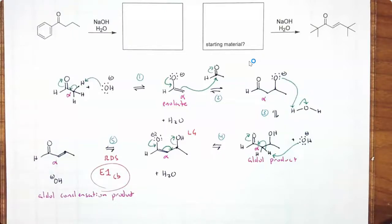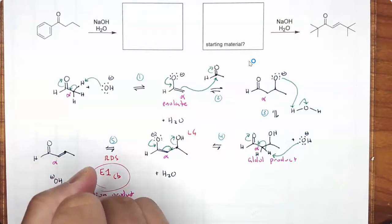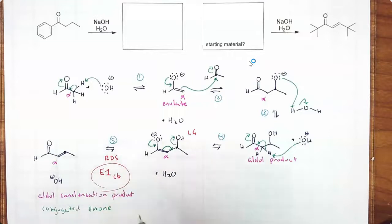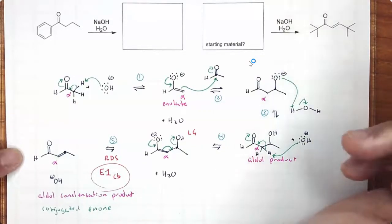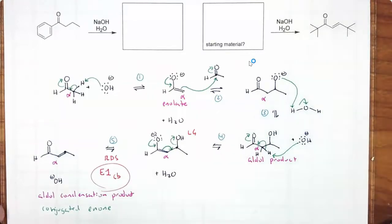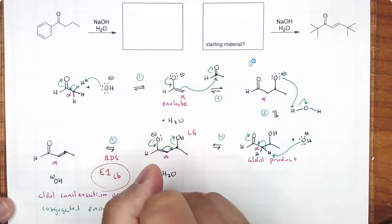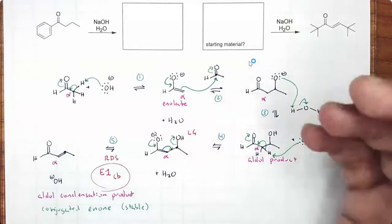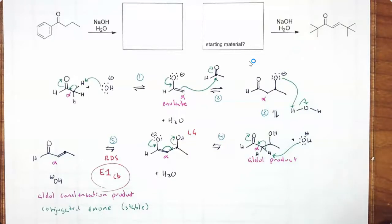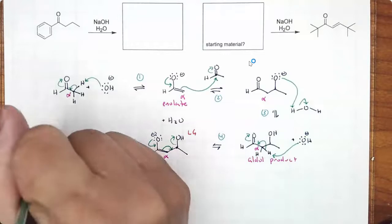Another thing to notice about the product is that your double bonds are called conjugated. We have a conjugated alkene and carbonyl — it's like an enone. I know it's an aldehyde here, but you could also do this with a ketone, which is where the name enone comes from — alkene ketone — but it also applies to the aldehyde equivalent. It's conjugated, meaning it's stable. You get stable double bonds when they are alternating: double bond, single bond, double bond. The driving force is to make this fairly stable aldol condensation product.